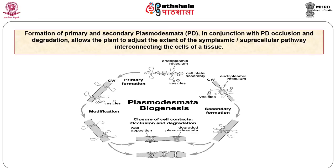The insertion of a second desmotubule into an elongated plasmodesmata pore can create two desmotubules within a shared pore orifice with increasing wall extension. The new plasmodesmata become separated from the original by increasing deposition of new cell wall microfibrils between the two pores. Central cavities may or may not form between the two pores depending on the plant species in question.